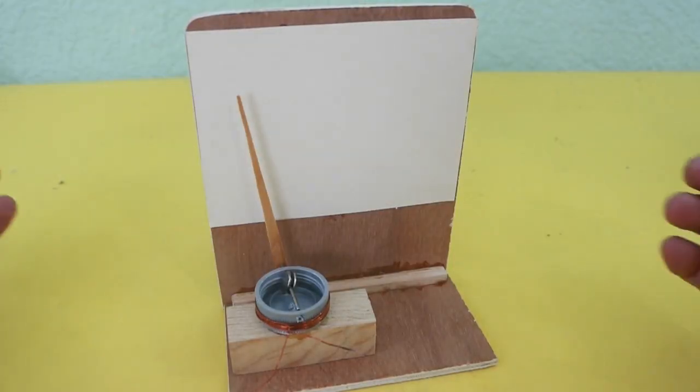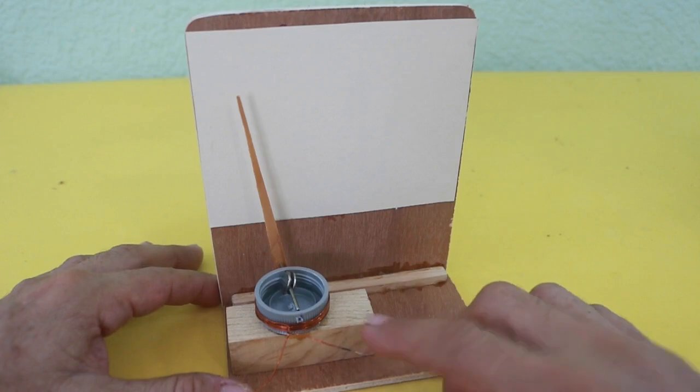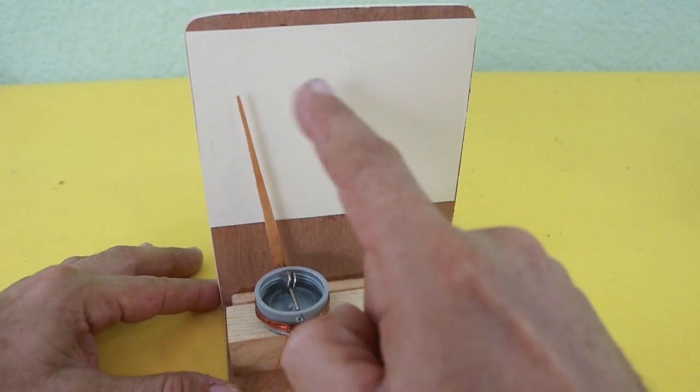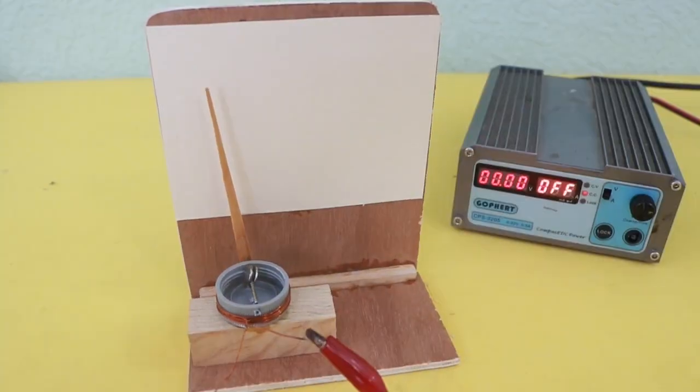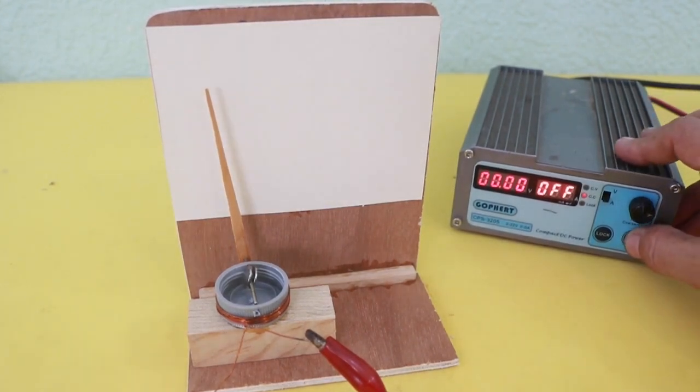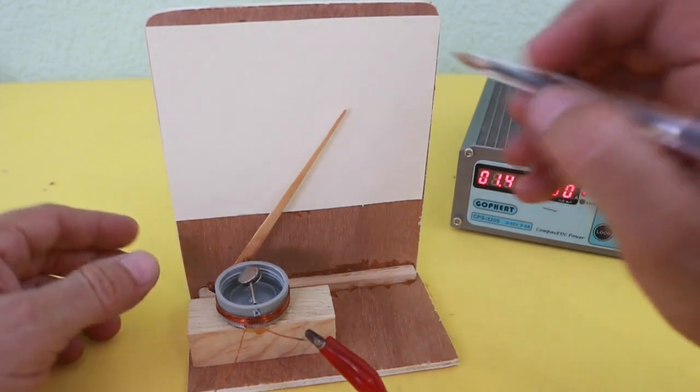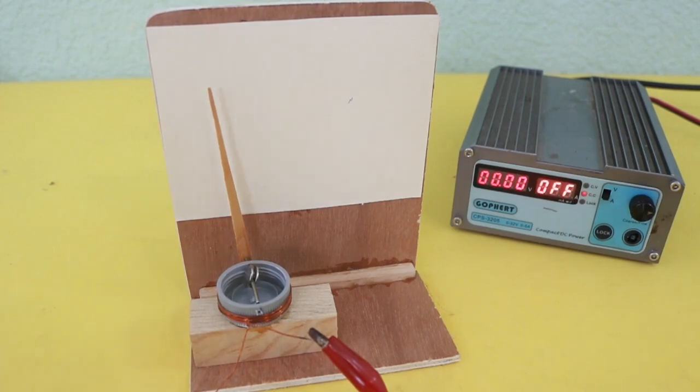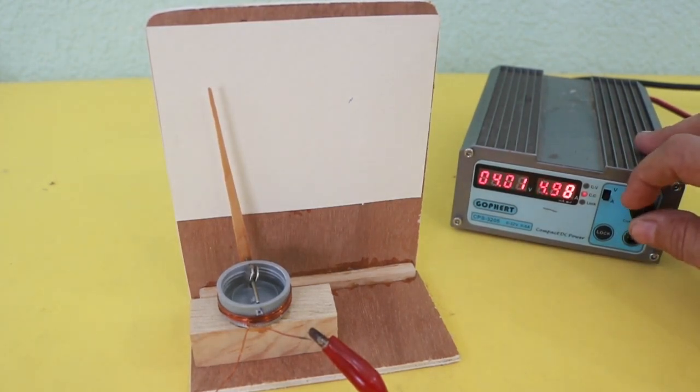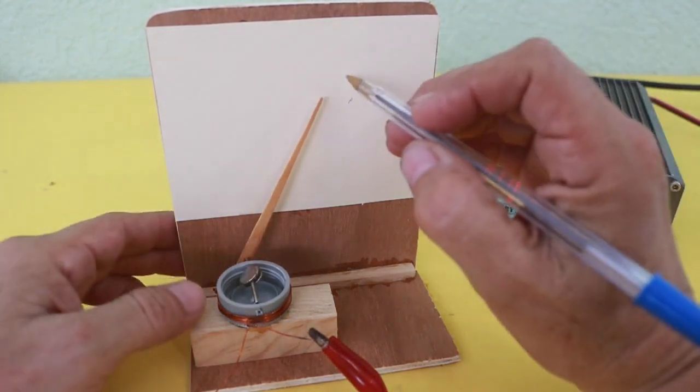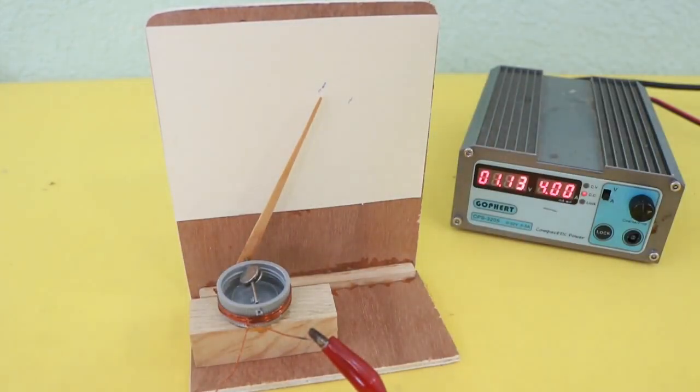Now we can make a scale by putting some known current through the device and marking on the paper the value of that current. Let's try first with 5 amps, now with 4 amps, and we continue with 3, 2 and 1.